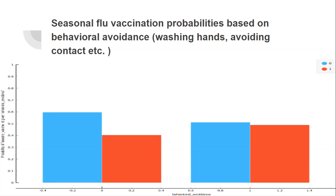The instructor asks: by looking at this slide, could you tell me if somebody does not wash their hands, will they choose seasonal or H1N1? If you don't have an idea, how would the machine learning model have an idea? The whole idea of exploratory data analysis is to understand your features with respect to your target values. Your targets are two — either seasonal or H1N1 — but you are not creating a relationship between them. You are just giving raw information without any useful insight.